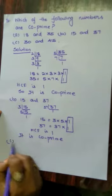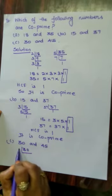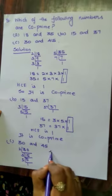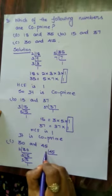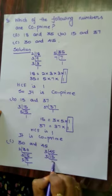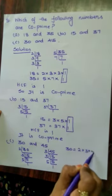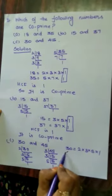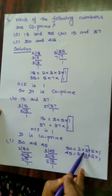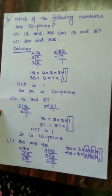Next: 30 and 45. 30 = 2 × 3 × 5 × 1. 45 = 3 × 3 × 5 × 1. Here we have common factors 3, 5, and 1 — that is 3 common factors. So 30 and 45 are not co-prime.